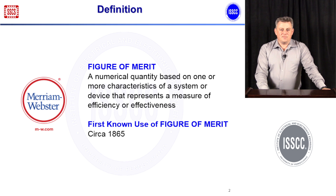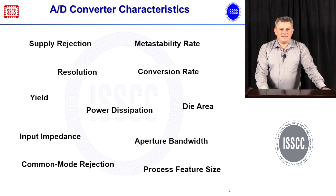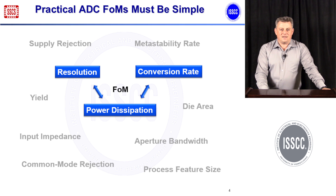Speaking of performance metrics, there are quite a few for A-to-D converters, and here I'm not even listing all of them. So as you can see, A-to-D converters are quite complicated. To construct a usable figure of merit, we can only use a subset of these, which is shown on my next slide.